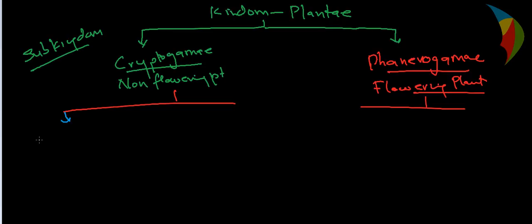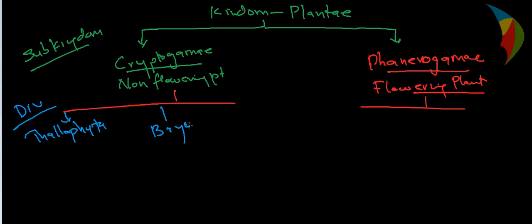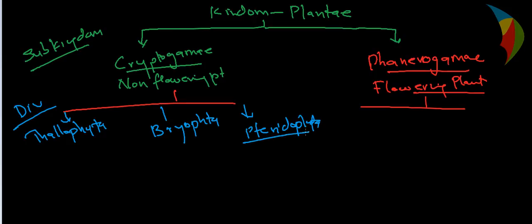The first division is Thallophyta. The second division is Bryophyta. The third is Pteridophyta. So we have divided the non-flowering plants into three divisions: Thallophyta, Bryophyta, and Pteridophyta.